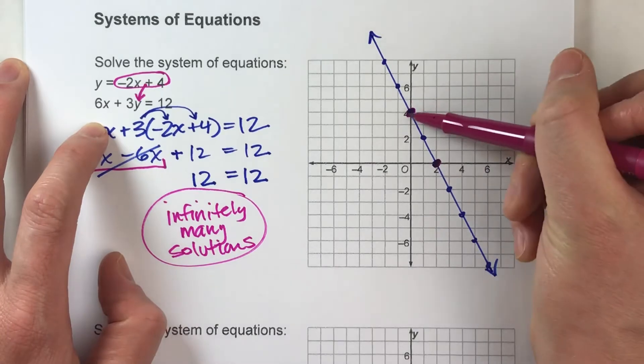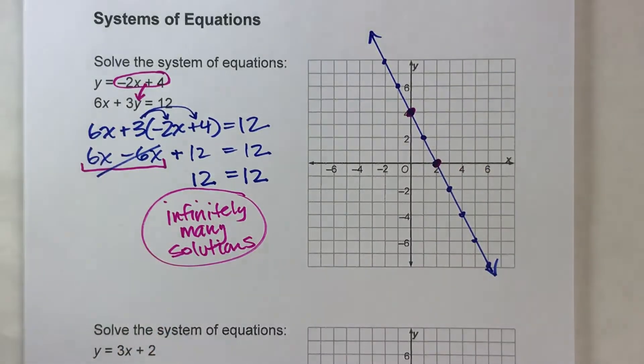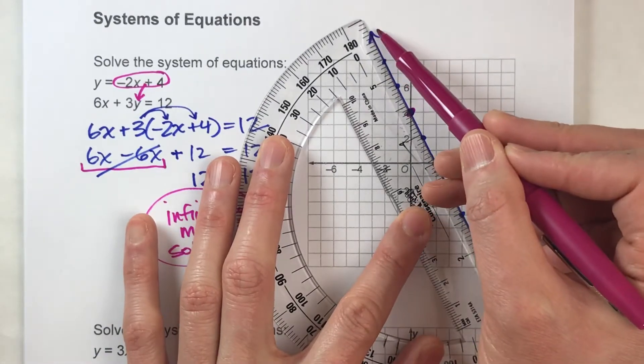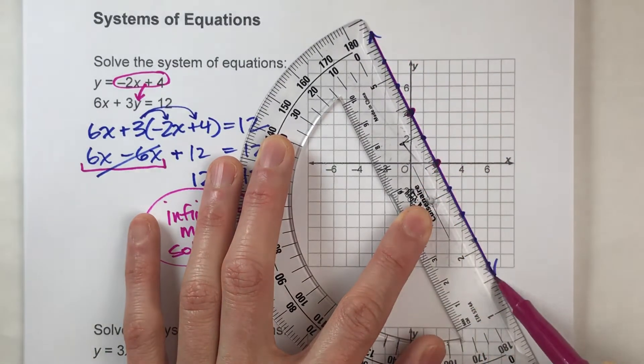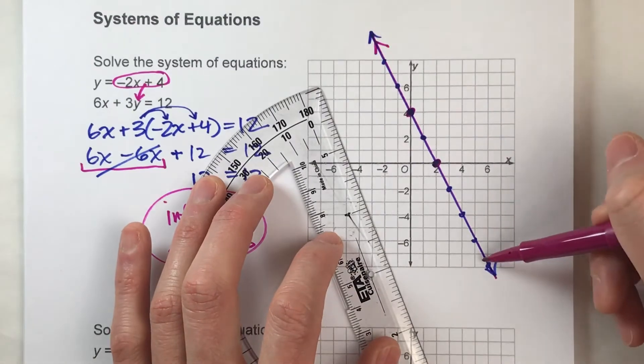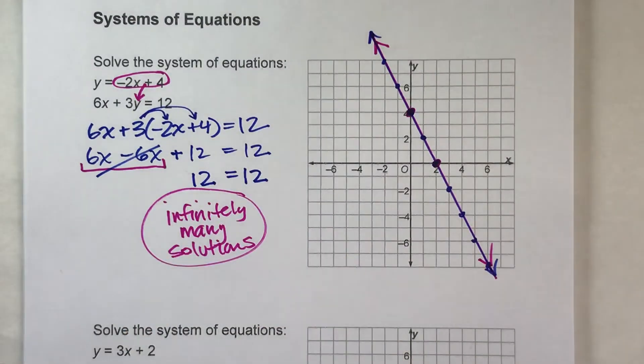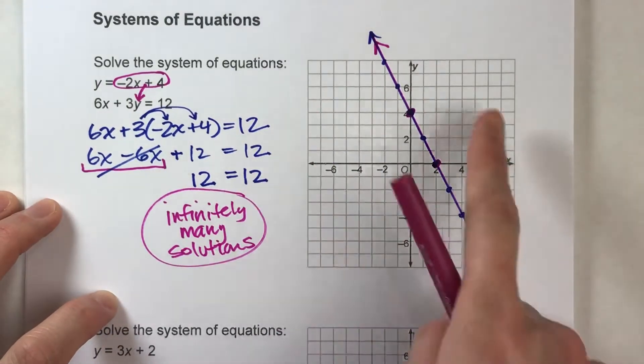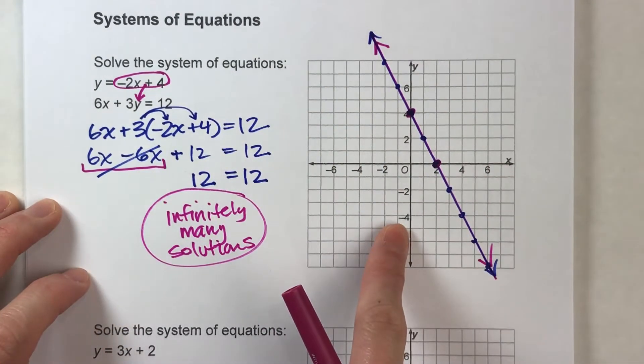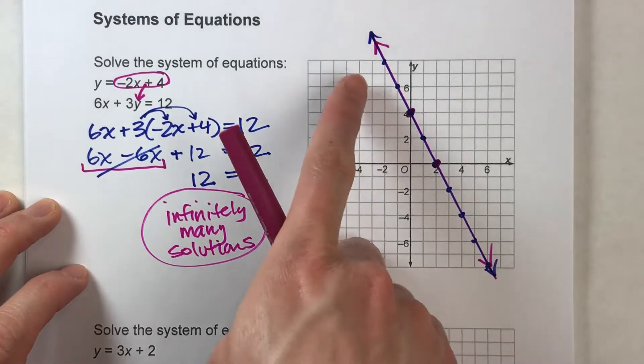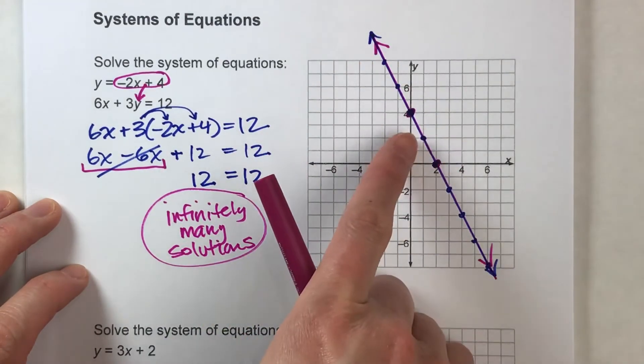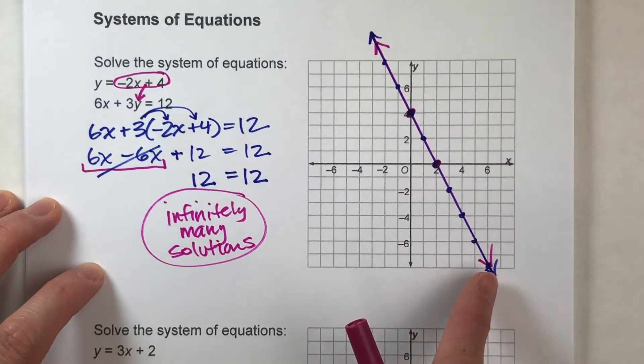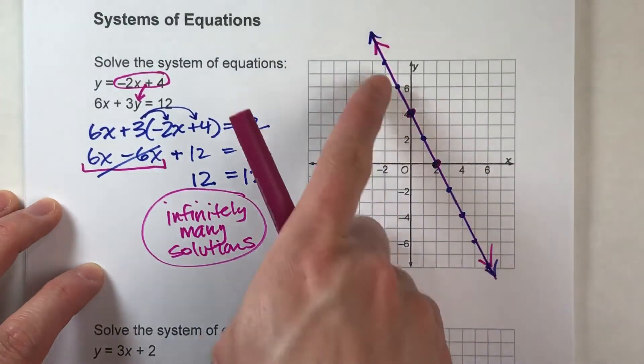Now notice, my intercepts are also on the same, they're also on the line, that blue line I already graphed. And if I draw my line through my intercepts, notice my line ends up right on top of the other line.